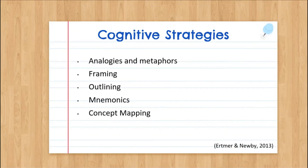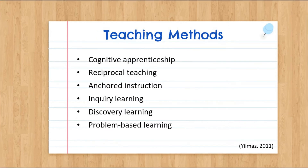Here are some cognitive strategies you can use in your teaching. Analogies and metaphors are great within cognitivism, as are framing, outlining, mnemonics, and concept mapping. The Yilmaz article also gives specific teaching method examples. Some start to tread into constructivism because Piaget and Vygotsky are important in both. Examples include cognitive apprenticeship, which is heavily influenced by Vygotsky and his zone of proximal development theory — more on that in our next module.